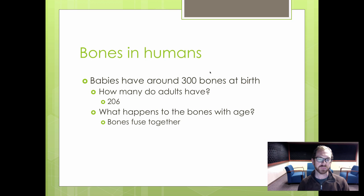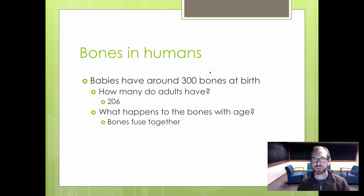When humans are born, they typically have, on average, about 300 bones. But as we become adults, the average number of bones is actually 206. So the question is: what happens as you age? Why do we have fewer bones when we're adults?